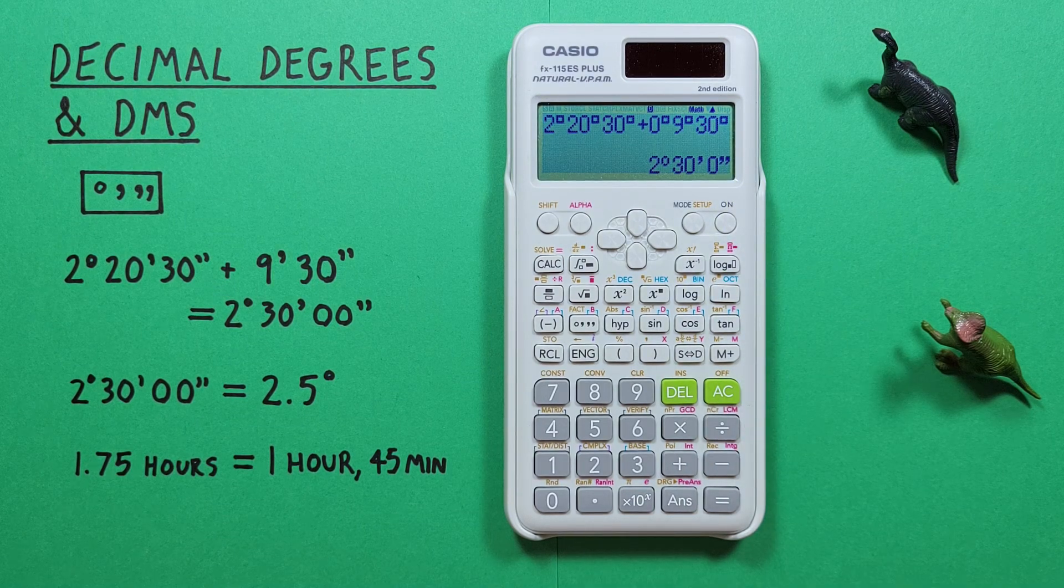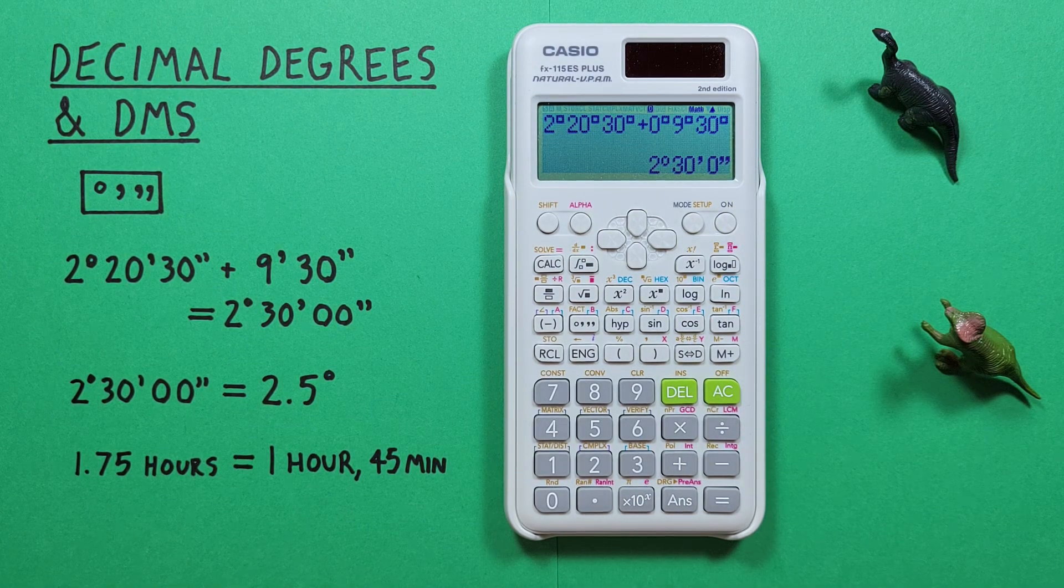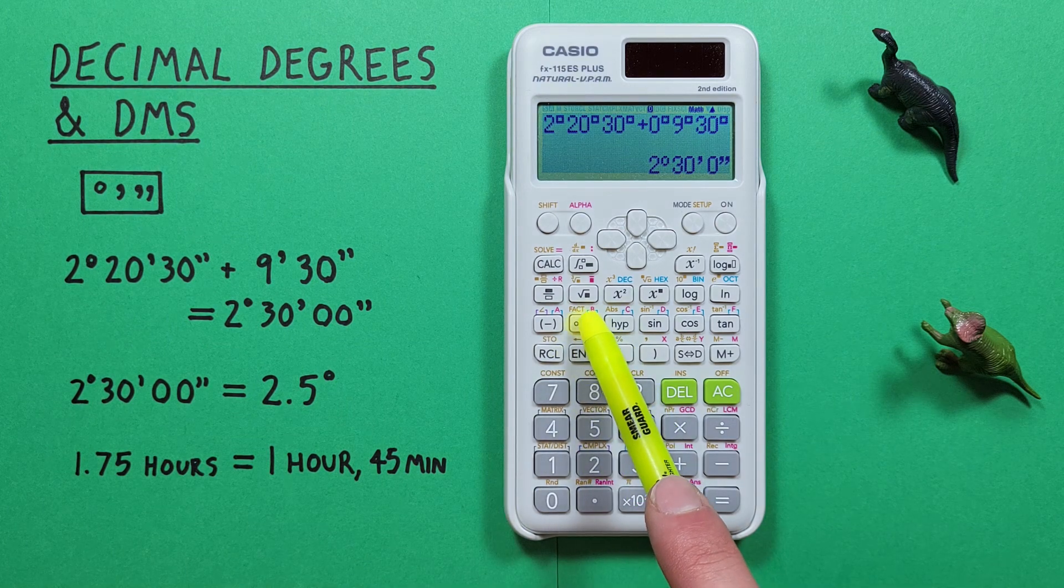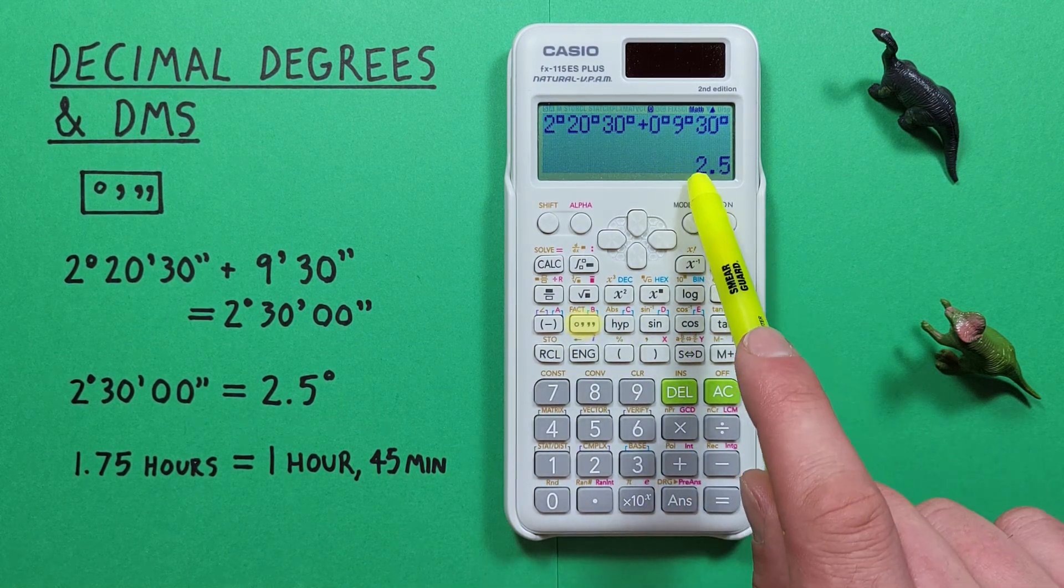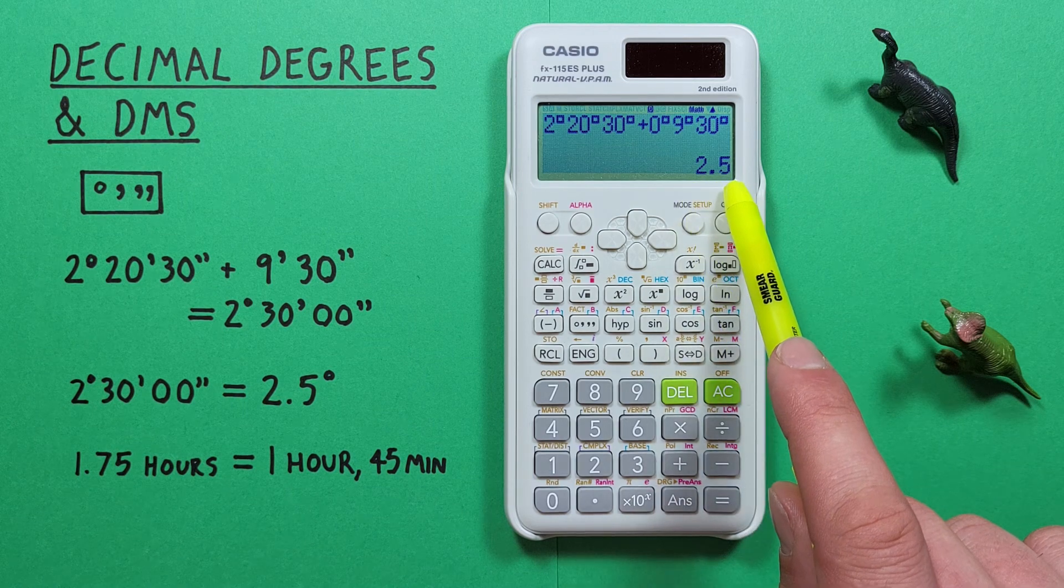If we want to convert this to decimal degrees we do that by pressing our degrees key again and then we see that's converted to 2.5 decimal degrees.